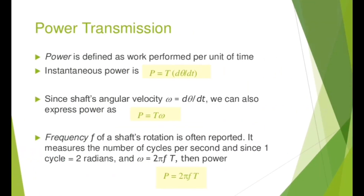Power transmission: power is determined as the work performed per unit of time. Instantaneous power equals T times d-theta/dt. Since the shaft's angular velocity omega equals d-theta/dt, we can also express this as P = T * omega.